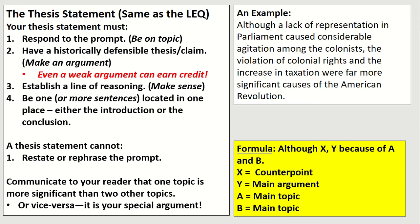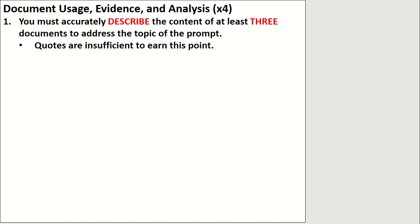Make sure that you get the thesis statement — that's also a very important point. The bulk of your points on a DBQ will come from document usage. You need to do something with the documents you're given; you'll be given seven all in all. First, you must accurately describe the content of at least three documents to address the topic of the prompt. Quotes are insufficient to earn this point — you cannot quote any documents or use opinions in an APUSH essay. You get a point if you accurately describe the content of at least three documents, and given that you're given seven, that is a very doable point.